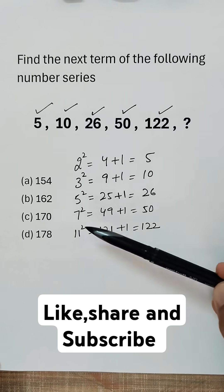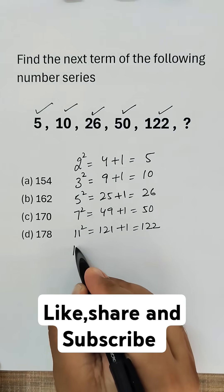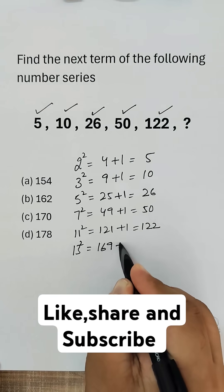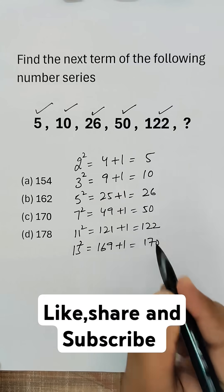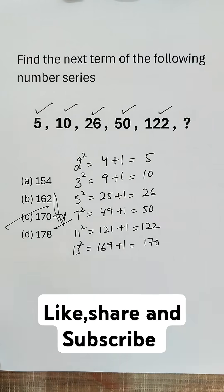So this missing number will be the next prime number 13 squared: 169 plus 1, equals 170. Option C is the correct term.